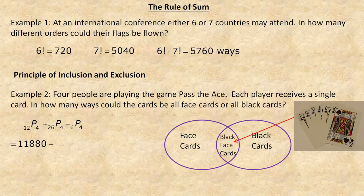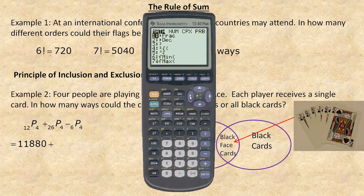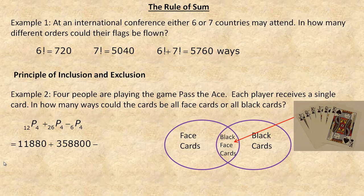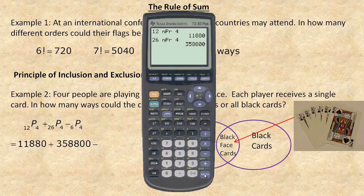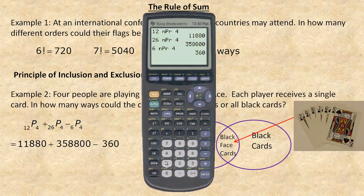Let me show this on the calculator. 12 permute 4 gives 11,880. Then 26 permute 4 gives 358,800. And 6 permute 4 gives 360. So we calculate 11,880 plus 358,800 minus 360 — subtracting the double-counted cards — to get 370,320 ways the cards could be all face cards or all black cards.